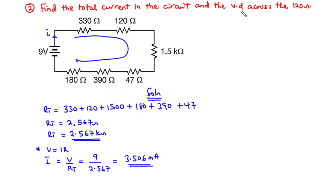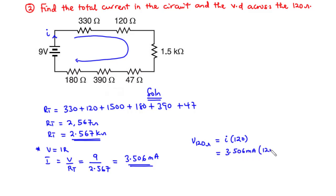Now we find the voltage drop across the 120 ohm resistor. That is V equals I times 120, which is 3.506 milliamperes times 120 ohms. Multiplying gives 420.72, and since the current is in milliamperes, the result is in millivolts — approximately 421 millivolts. That is the voltage dropped across the 120 ohm resistor.